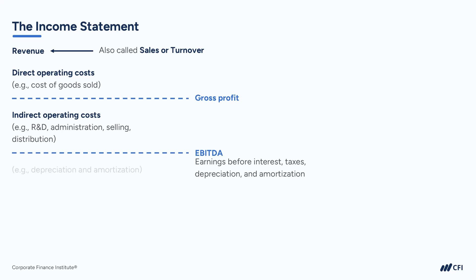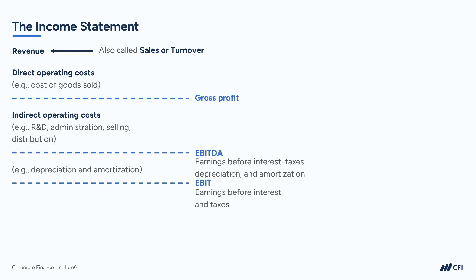Next, we deduct depreciation and amortization expense, which relates to the assets we are using in the business. We're going to cover depreciation in more detail later in the course. Our next profit line is EBIT, which stands for Earnings Before Interest and Taxes. This line is also sometimes referred to as the operating profit or operating income. I like to think of it as the operating lifeblood of a business.